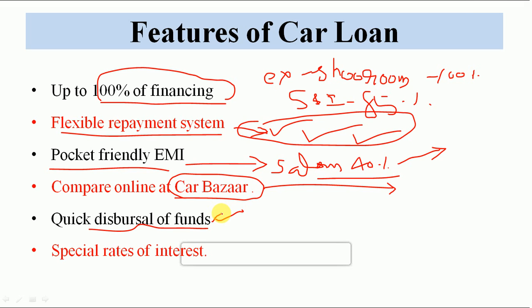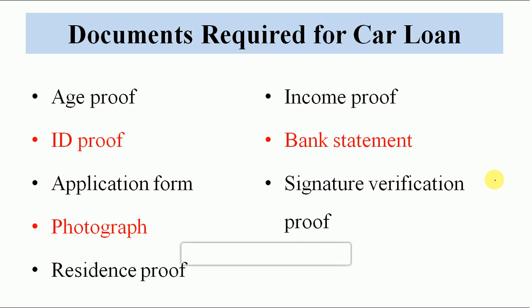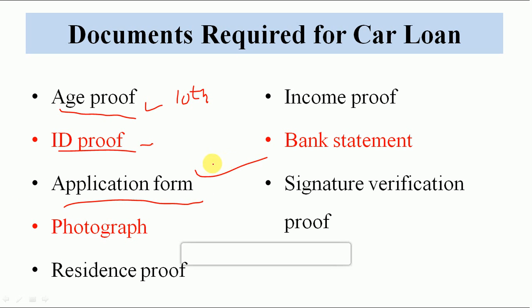Quick dispersal of funds — car loan aapko bahut easily mil jata hai. Aapko thodi formalities poori karni hoti hain: 2 saal ki income return deni hoti hai, jahan pe aap kaam karte ho uska identity card, aapka Aadhaar card, PAN card, aur last six months ki bank statement. Yeh saari cheezein doge to bahut easily aapko loan mil jaata hai. Special rate of interest hoti hai — yeh depend karta hai aapki salary kitni hai, aap kitne saal se kaam kar rahe ho, whether you are permanent or temporary. CIBIL score agar 750 se upar aata hai to lagbhag 1% aapki interest rate kam ho jati hai.